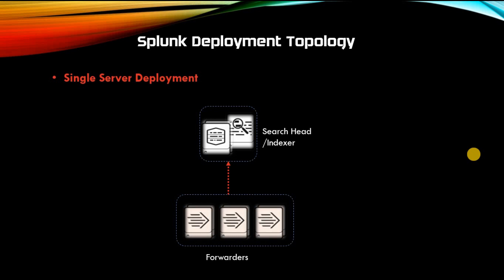Let's see how you can deploy your Splunk instances. Before selecting a topology option, it is highly recommended that you understand the use cases — study your environment, availability requirements, geographical setup, etc. The simplest setup for proof of concept or small environments is single server deployment, where you can have the indexer and search head on the same machine without high availability. This topology is typically used for smaller, non-business-critical use cases and is very cost-effective.